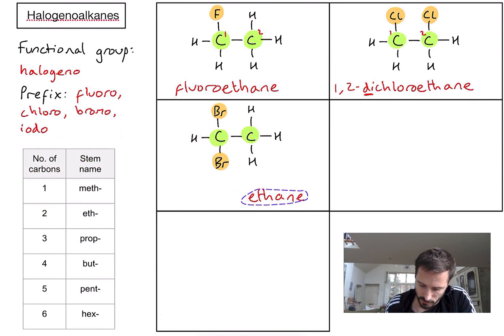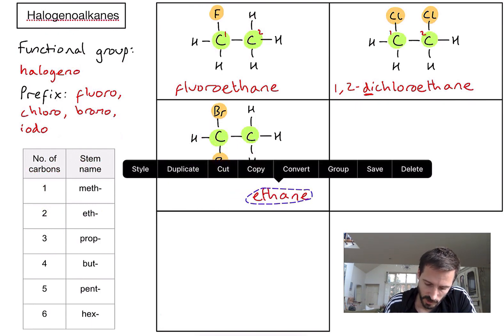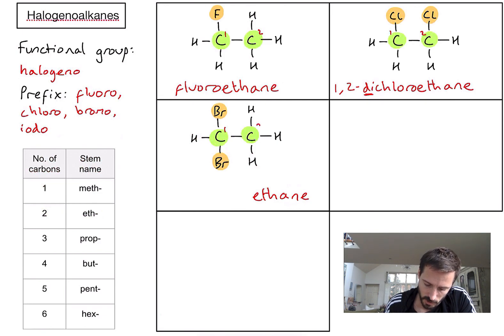Let's number the carbons one and two. In this case, both bromines are on the first carbon. However, I still need to write two numbers because there are two bromines. So I write 1,1-dibromoethane. Those two numbers tell me which carbons they're on, and the di tells me there are two bromines.